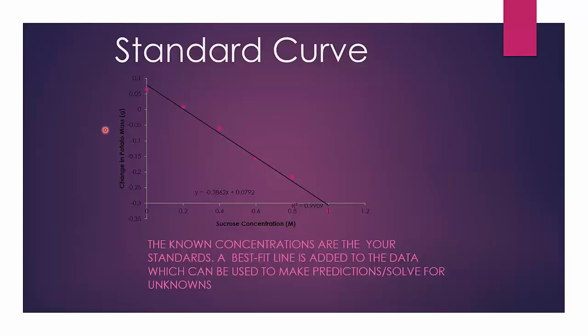So if you know the concentration of some standards, you can make a standard curve. So the standards are known solutions, you make a standard curve, you use a best fit line, you can find the equation of that line, and then you can solve the equation for the unknown variable. So in this case, y refers to the y-axis, and x refers to the x-axis. You can solve for y or x, depending on which is known and which is unknown, and determine the solution.